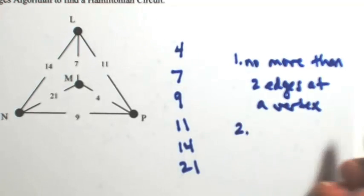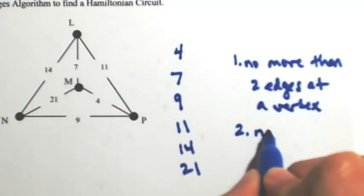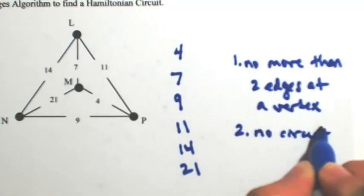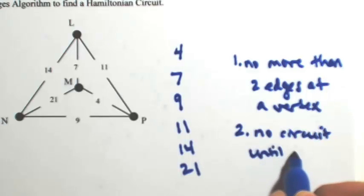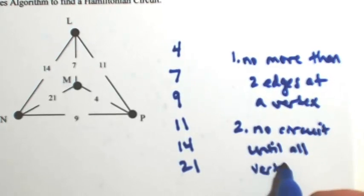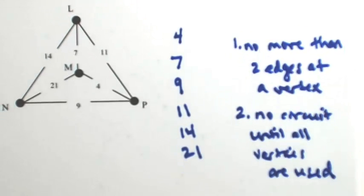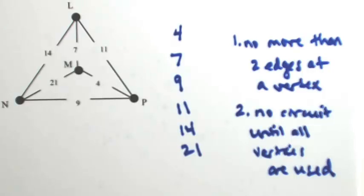And the second thing is that we don't have any premature circuits. So we don't want to have a circuit until we include all of the edges. So no circuit until, I meant to say all the vertices, until all the vertices are used. So we're looking for those two conditions to be satisfied.